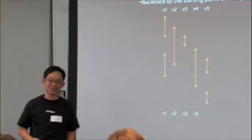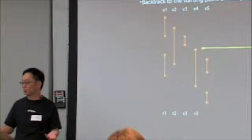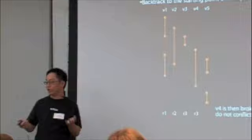And it backtracks to the starting point of the spill victim and spills the life interval. In this case, let's assume we picked V4 to spill.